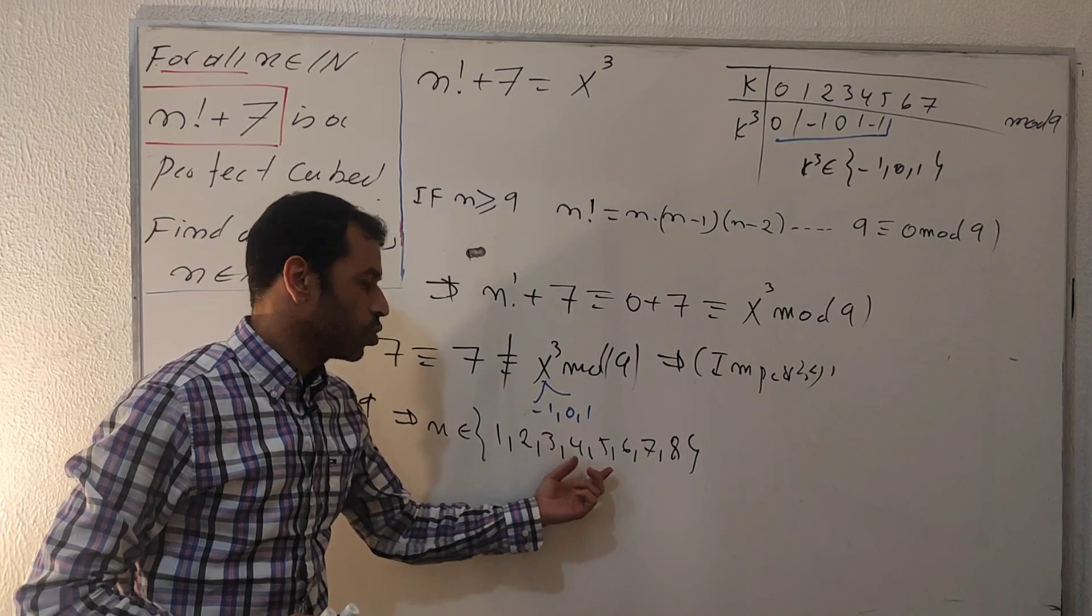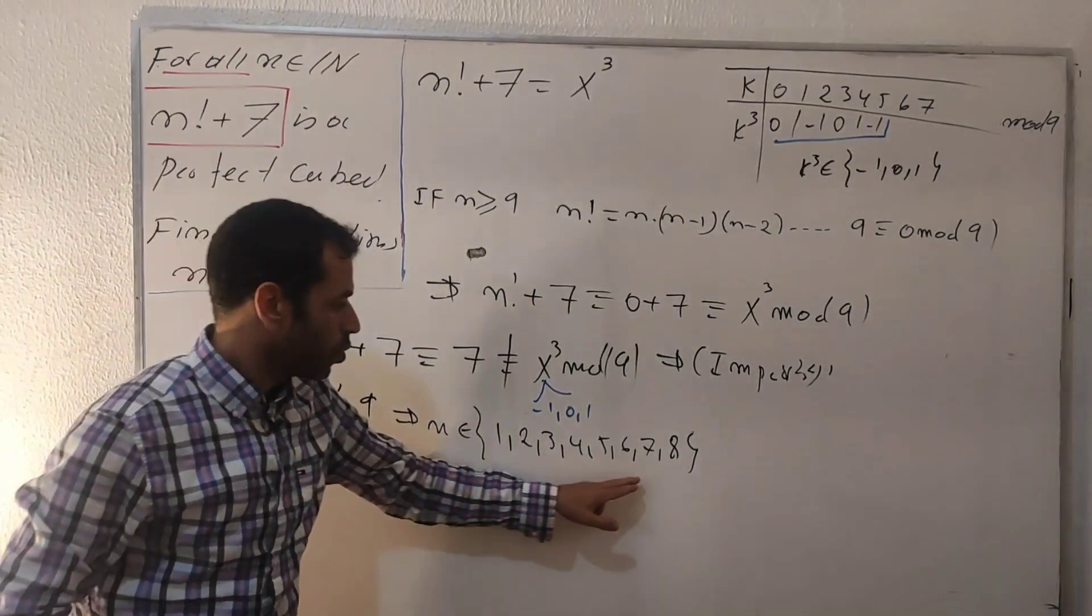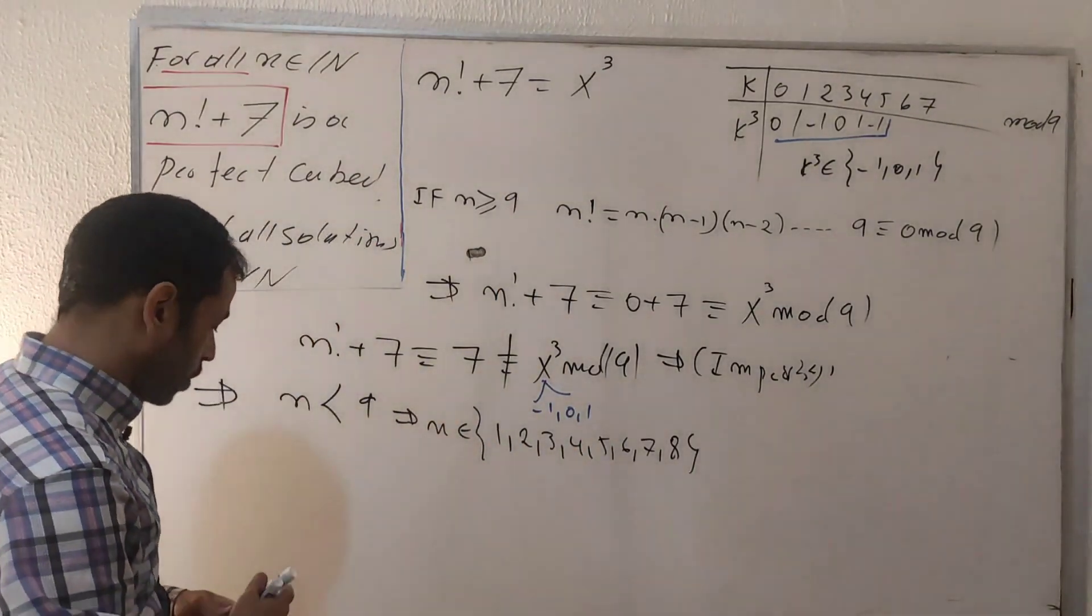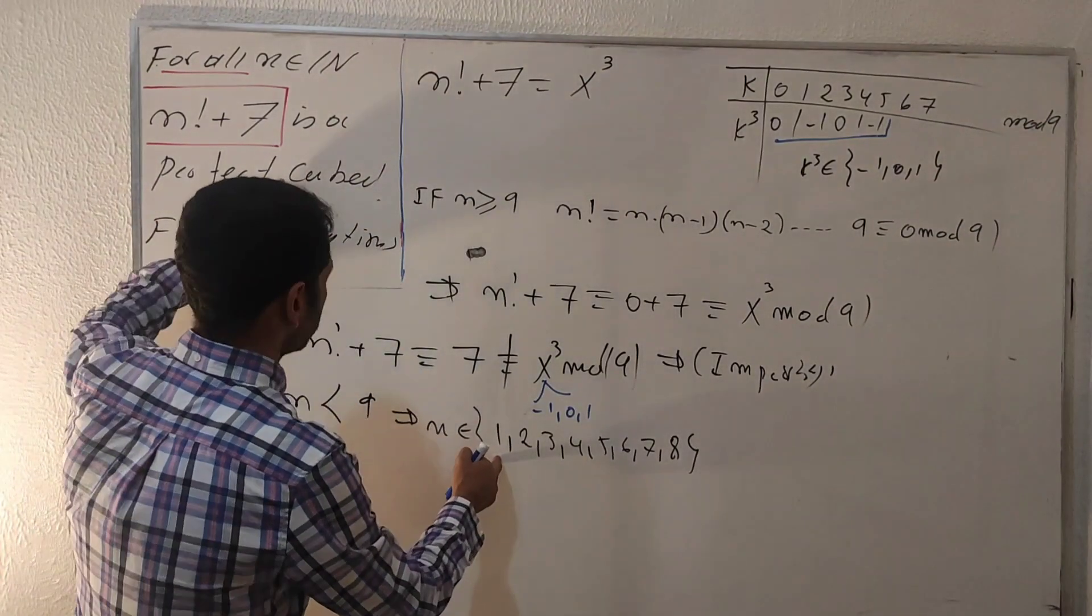Now let's go through each one, replacing all of these values. Whatever we find that is a perfect cube is a solution. We're taking n as a natural number, starting with number one.